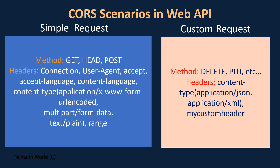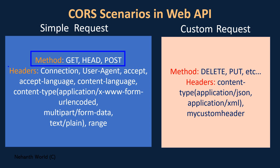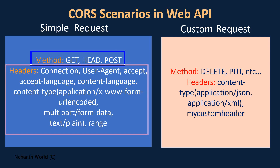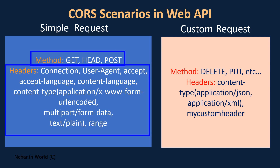Here we are showing a few things — you can see on the left side we have a method and here we have headers. We have listed three method types: GET, HEAD, and POST. And in headers, we have listed a few headers. So if your request is having any one of these, we can say that is a simple request.